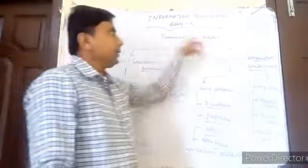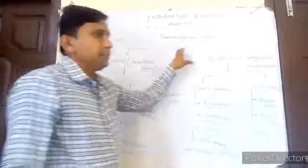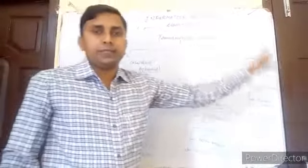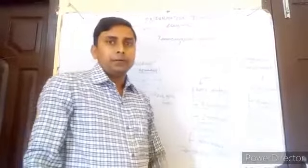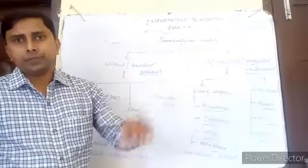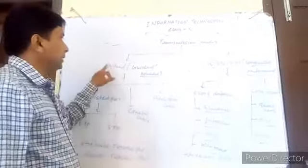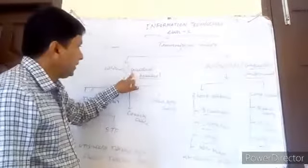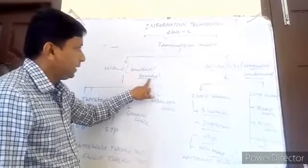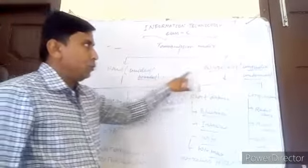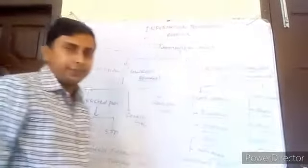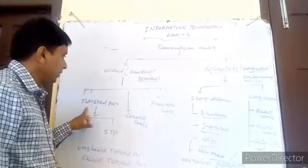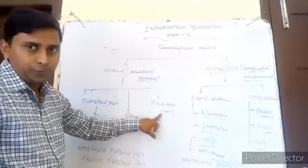Now again we will discuss one more time: transmission media is a medium so that data can be transmitted from one computer to another computer over a network. It is divided into wired and wireless. Wired media is also known as guided media and also known as bounded. Wireless is unguided and unbounded. Wired media is again divided into twisted pair, coaxial cable, and fiber optics.